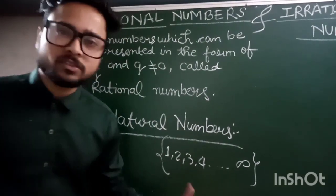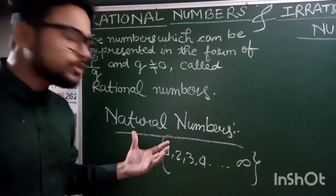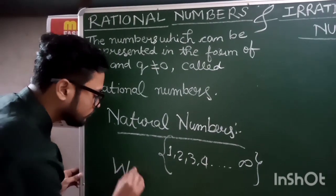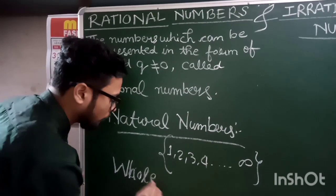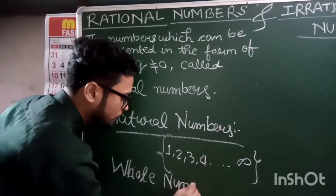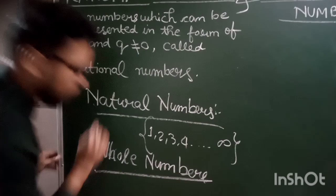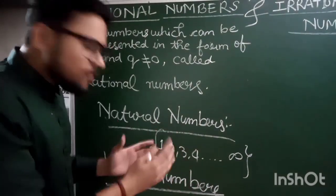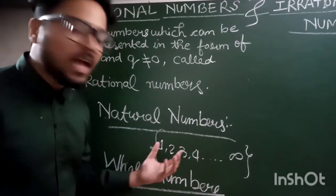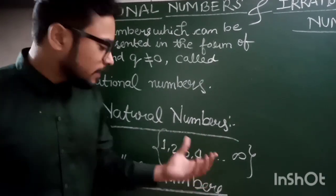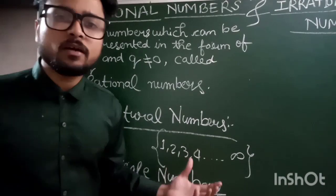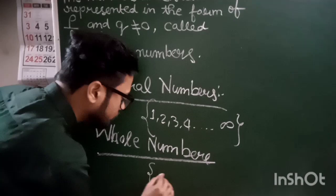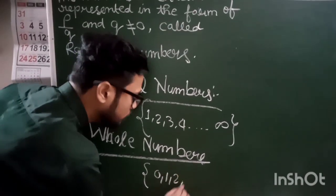The set of counting numbers continuing till infinity are called natural numbers. Now what are whole numbers? If we include zero in the family of natural numbers, then this complete set becomes the family of whole numbers: 0, 1, 2, 3, and so on till infinity.